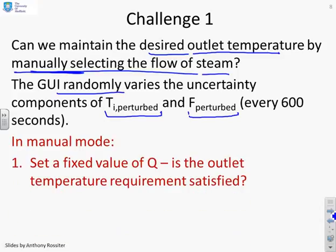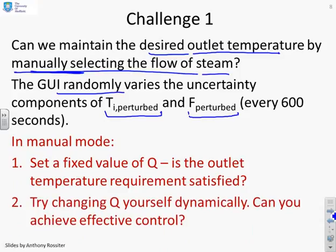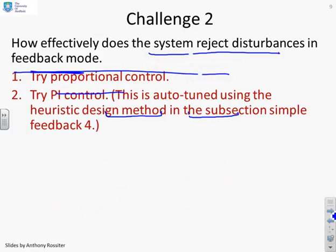So in manual mode you've got two alternatives. You can set a fixed value of Q and see does it work, and that's probably what you would do in a shower normally. You'd set the knobs and just hope it works. Or you can try to keep changing Q and see can you still get effective control. And that's basically saying can open loop control and even a little bit of manual control give you what you want.